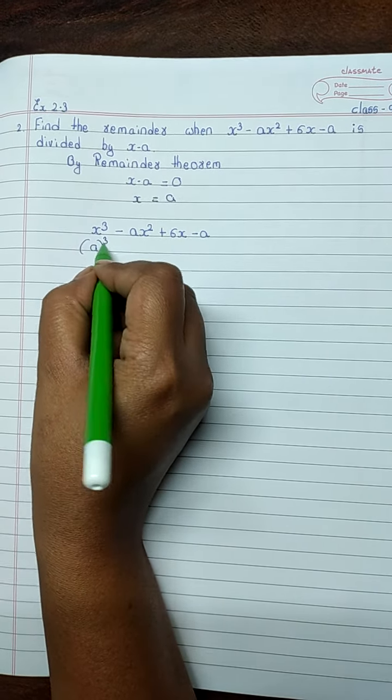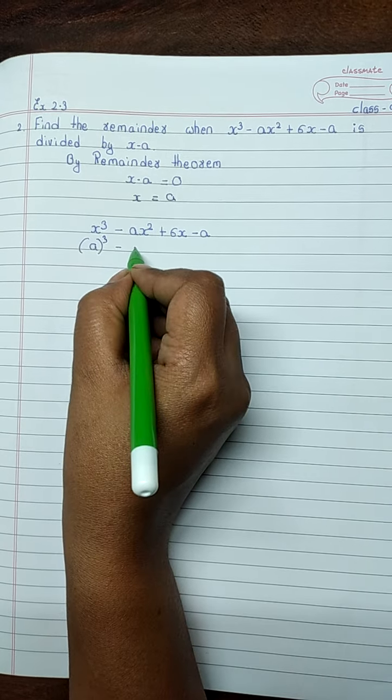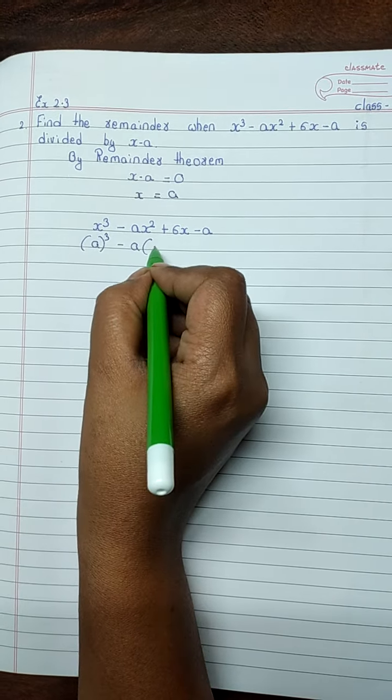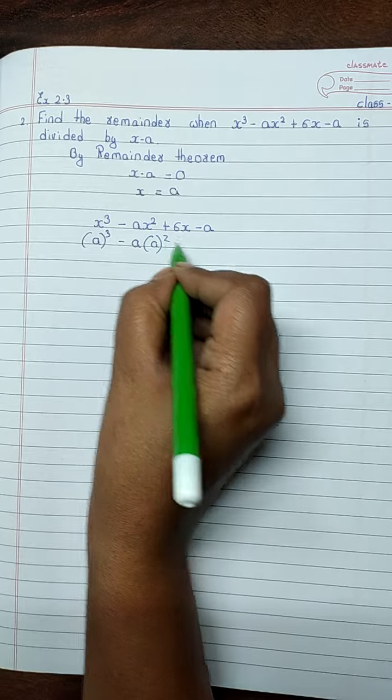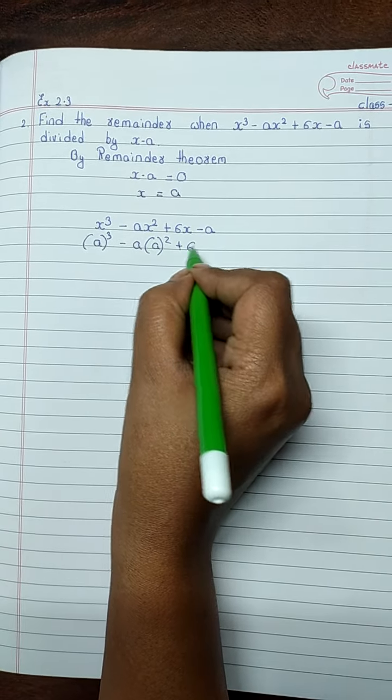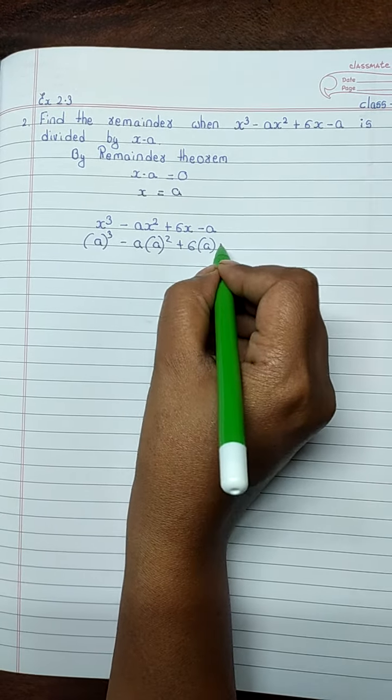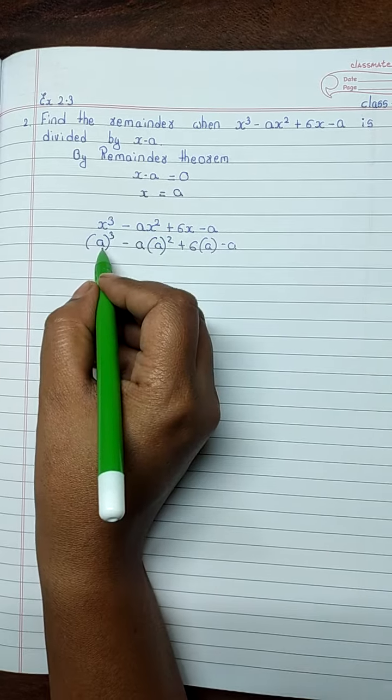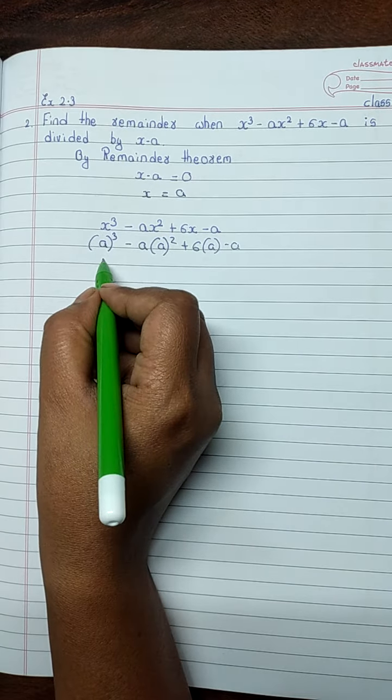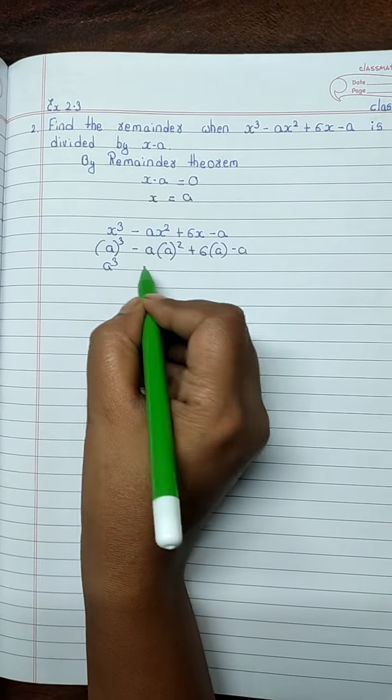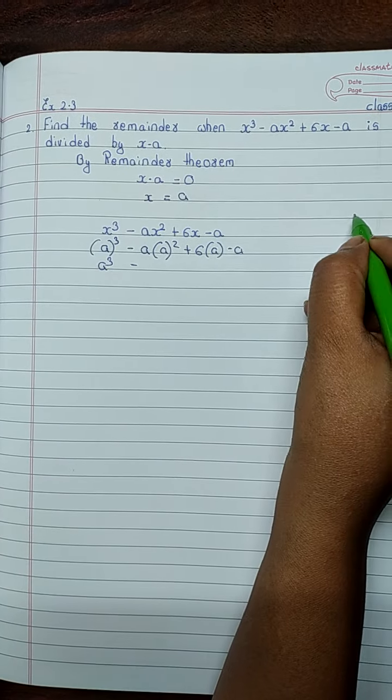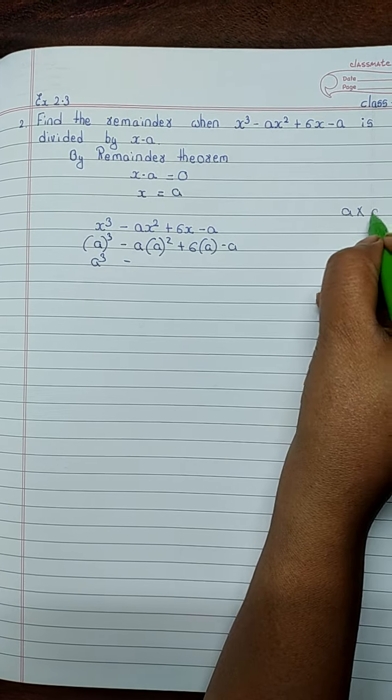a cube minus a, a square plus 6 into a minus a. a into a into a is a cube minus a into a square.